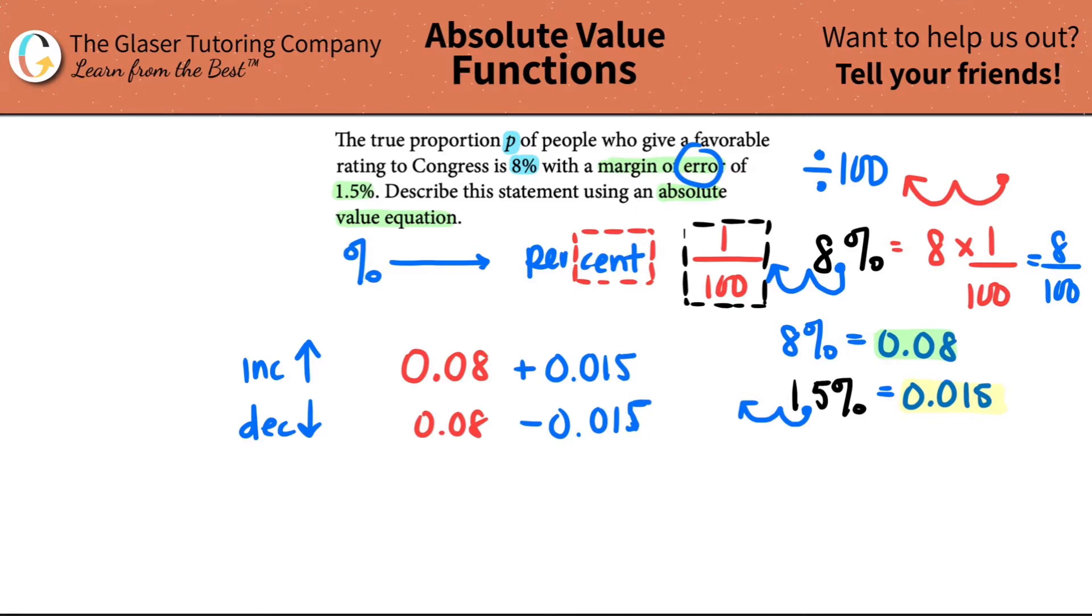So the true proportion of these people is going to fall into the realm of this. So now let's start writing it in terms of greater than or less than. So if we put the proportion of people, it could be that this would be the high number, right? Because we're adding. And this would be the lower number because we're subtracting. So it makes sense that this, since we're overshooting the error, it would be greater than.